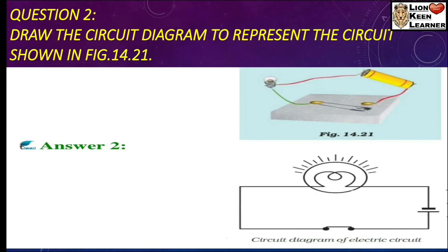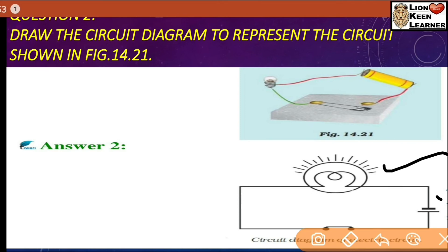Next question, Question number two: Draw the circuit diagram to represent the circuit shown in figure 14.21. पहले हम question में देख लेते हैं, यहाँ पर switch off position पे है, एक battery है और cell जिसे हम बोलते हैं, एक bulb है. Answer में, switch on position में दिखाया गया है switch को और एक battery का symbol है और एक bulb का. आप देख सकते हैं, bulb, battery और switch on position में एक symbol है.